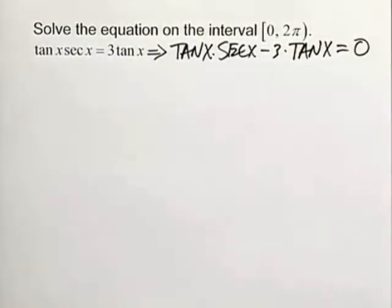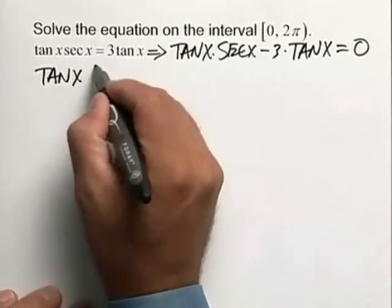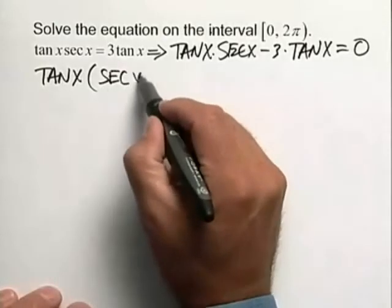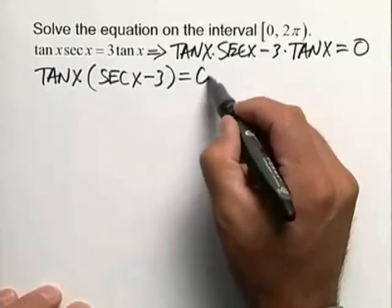Now we want a multiplication problem on the left so we'll factor a tangent of x out in front, multiply by what remains which in this case is the secant of x minus 3, and that's going to be equal to 0.